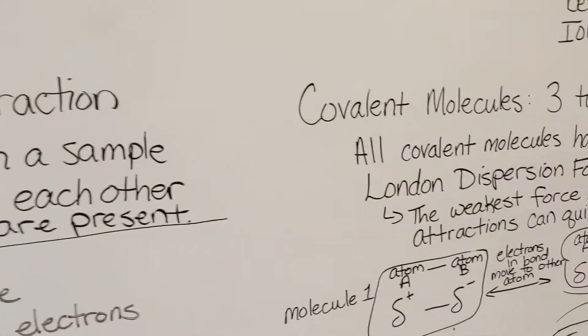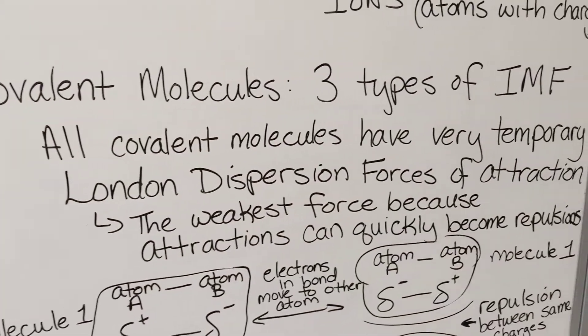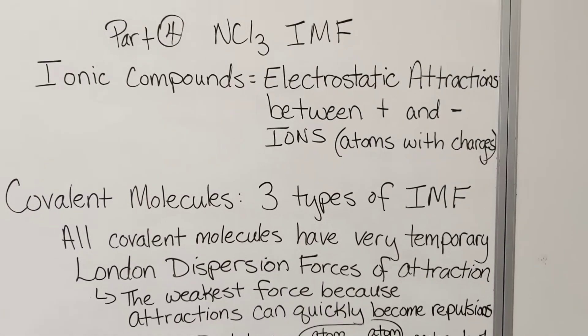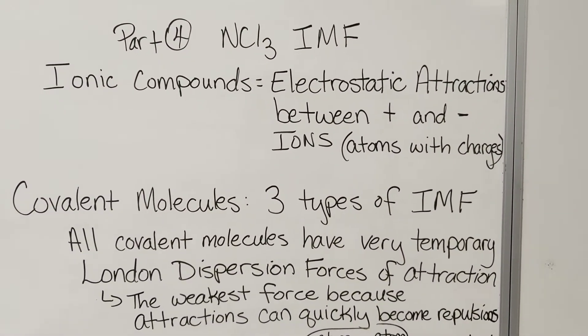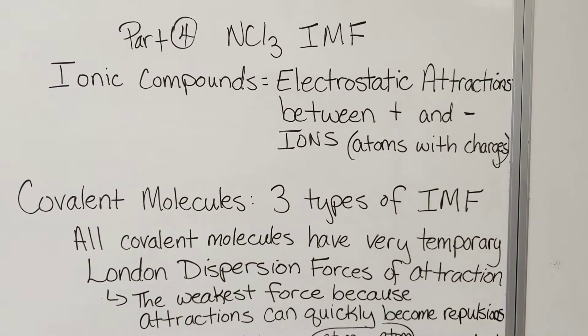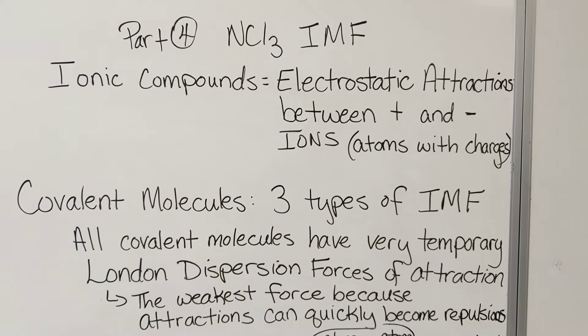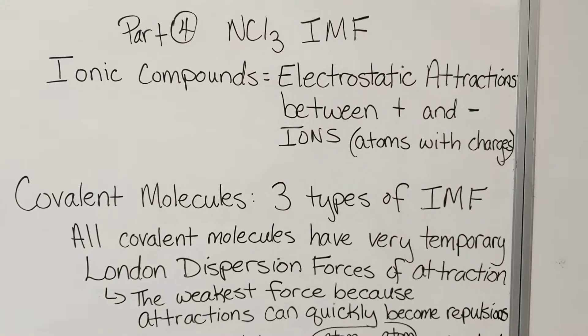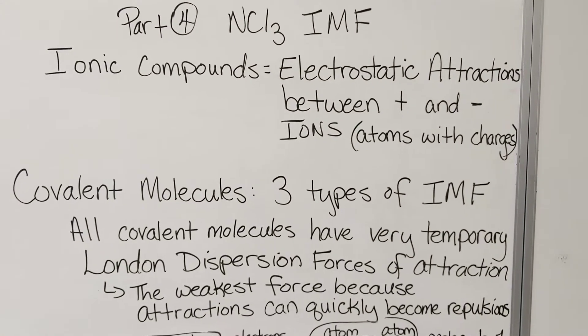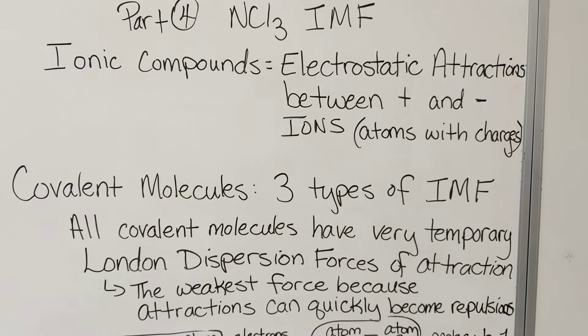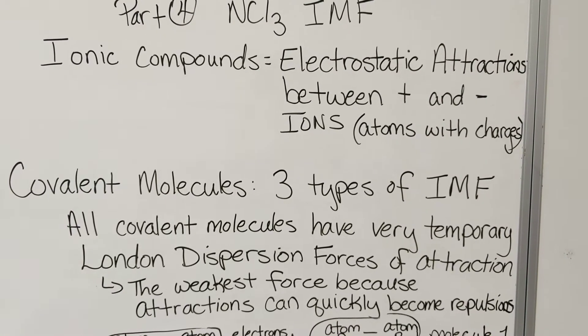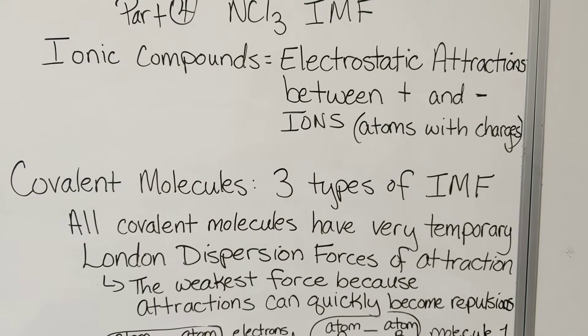When it comes to forces of attraction between particles in a sample, if it is an ionic compound, there are electrostatic attractions between the positive and negative ions. Ionic compounds have ions - atoms with positive and negative charges because they have fewer or more electrons than protons in the atom.